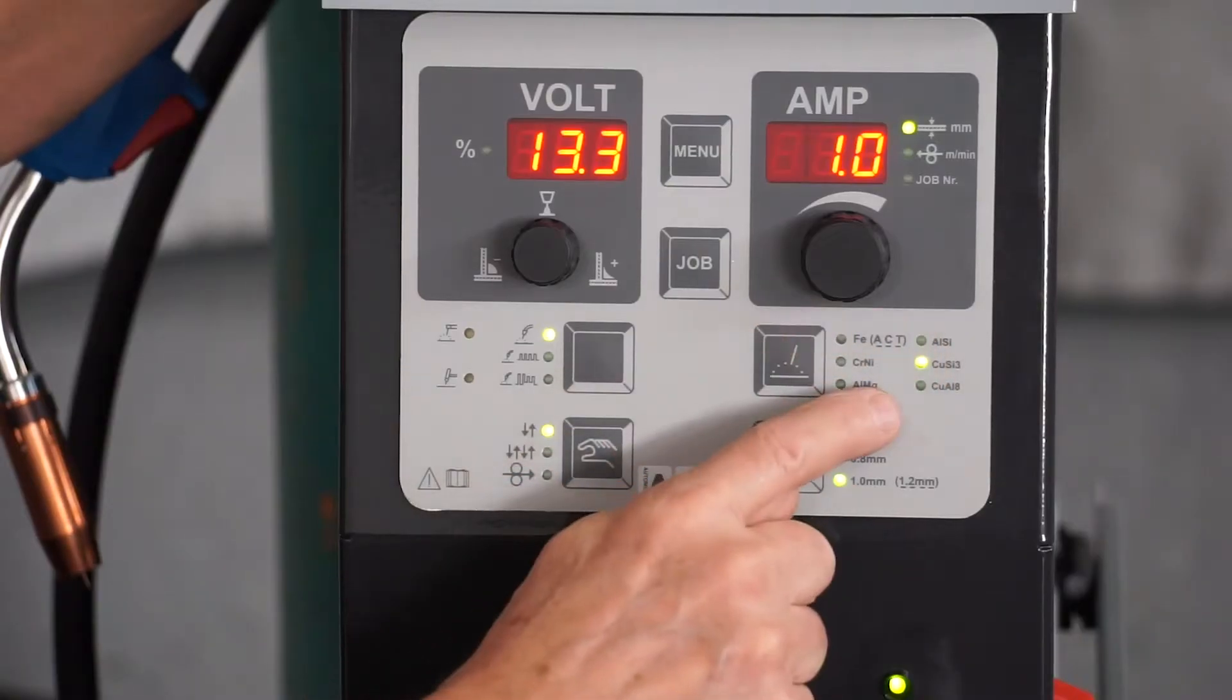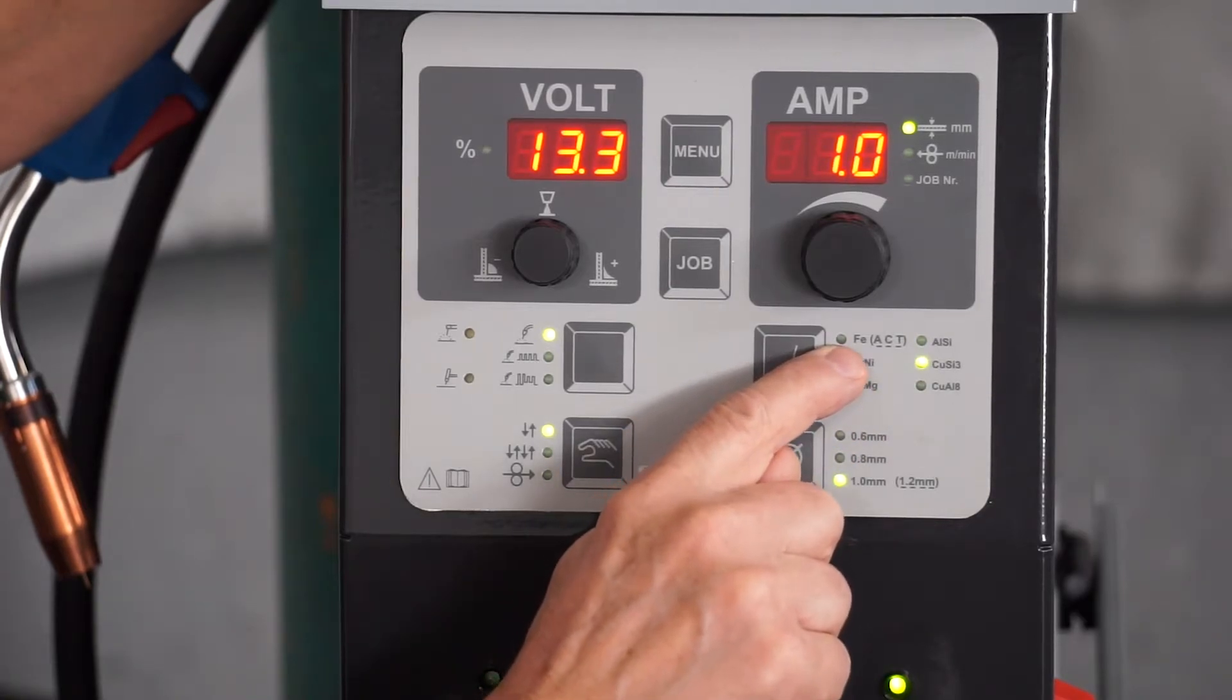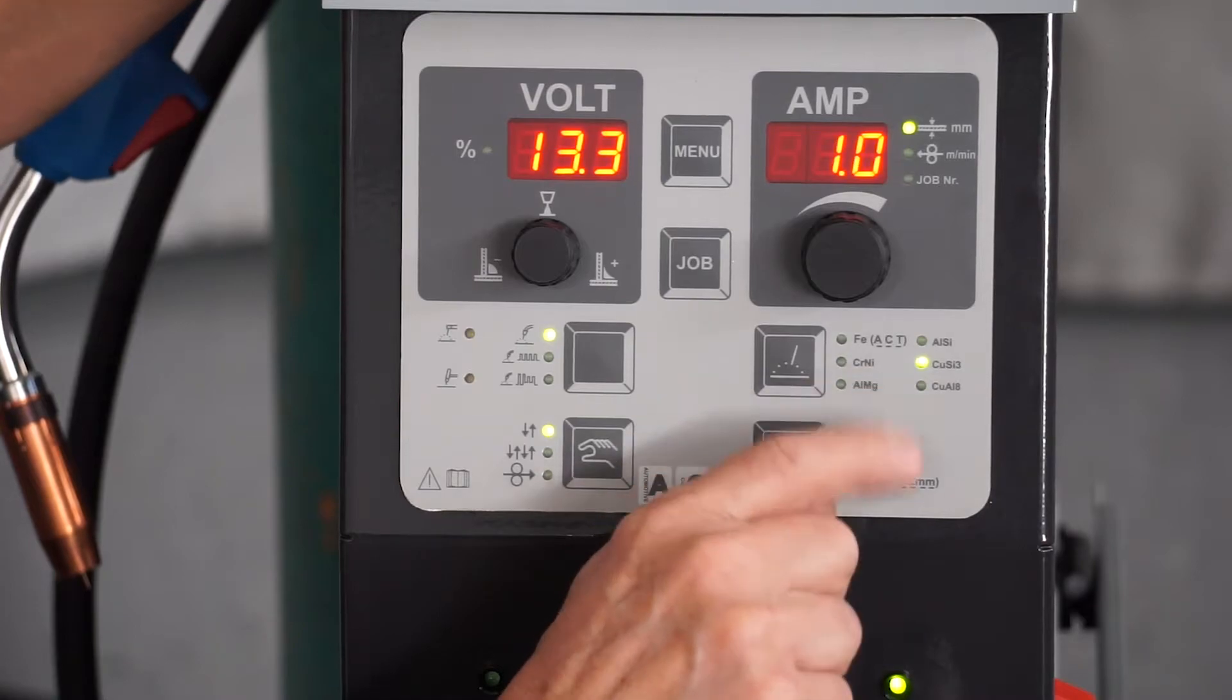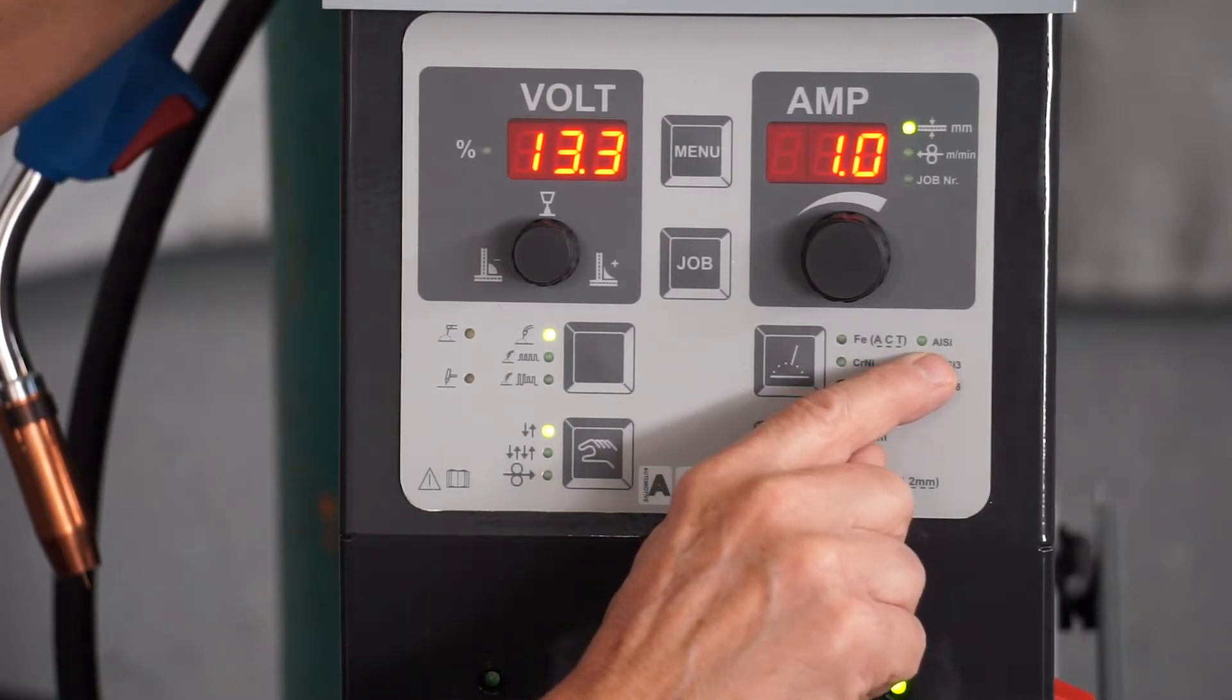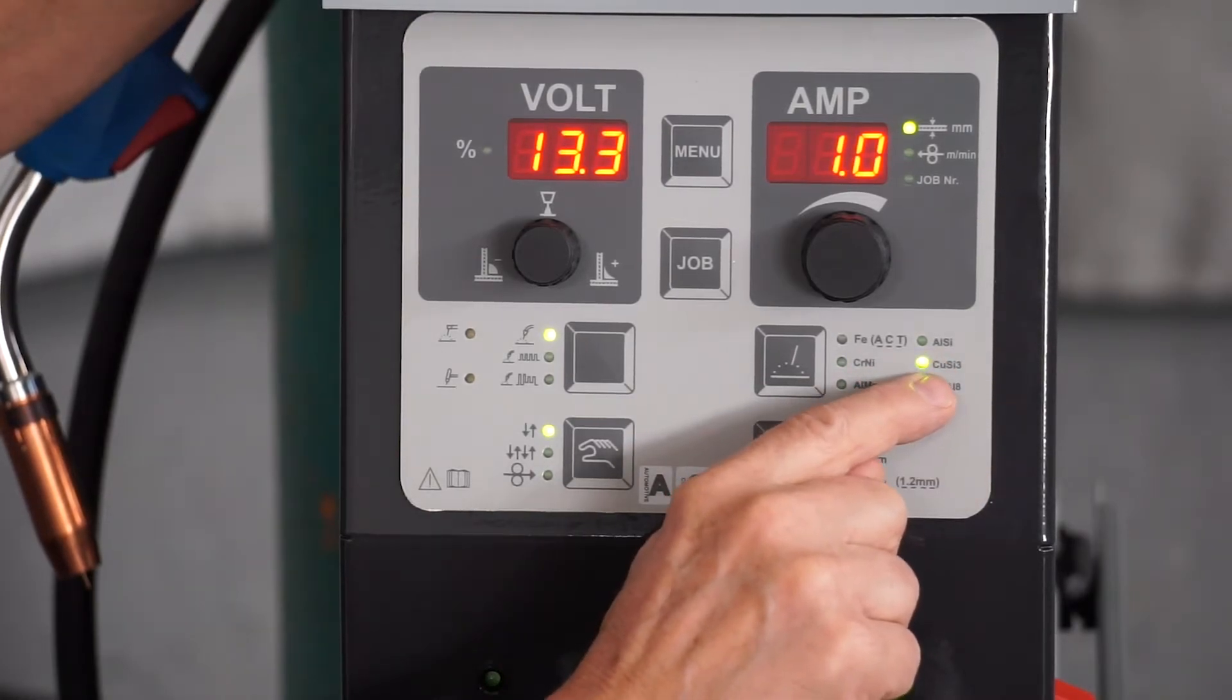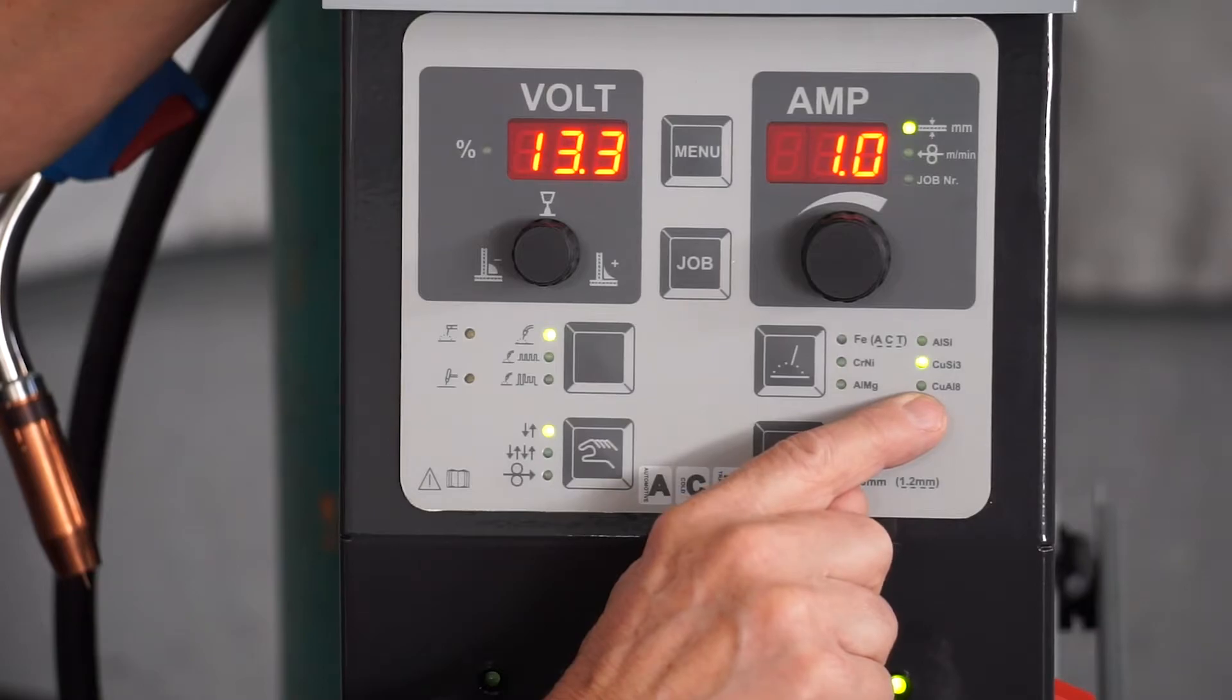The next set of parameters up here are the type of wire that you are running through the machine. So we have FE, which stands for iron or steel wire. The CRNI is chromium nickel or stainless steel. The ALMG is aluminum magnesium, which is a 5000 series material. The ALSI is an aluminum siliceum, which is a 4000 series material. CUSI is copper silicone, better known as MIG brazing. And CUAL8 is copper aluminum, which right now I believe Mercedes is using on some of their structural products.